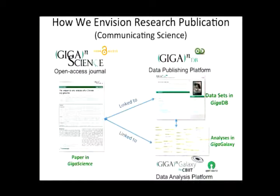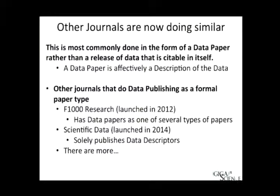Other journals are now doing similar things, most commonly in the form of a data paper rather than the release of data that is citable in and of itself. A data paper is effectively a description of the data — this is important because currently most descriptions are ending up in supplemental material. Faculty of 1000 Research, launched in 2012, has data papers and several other types of papers. Scientific Data, launched this year, solely publishes data descriptors. These data papers are in the standard paper format — ways to cite data as a paper.